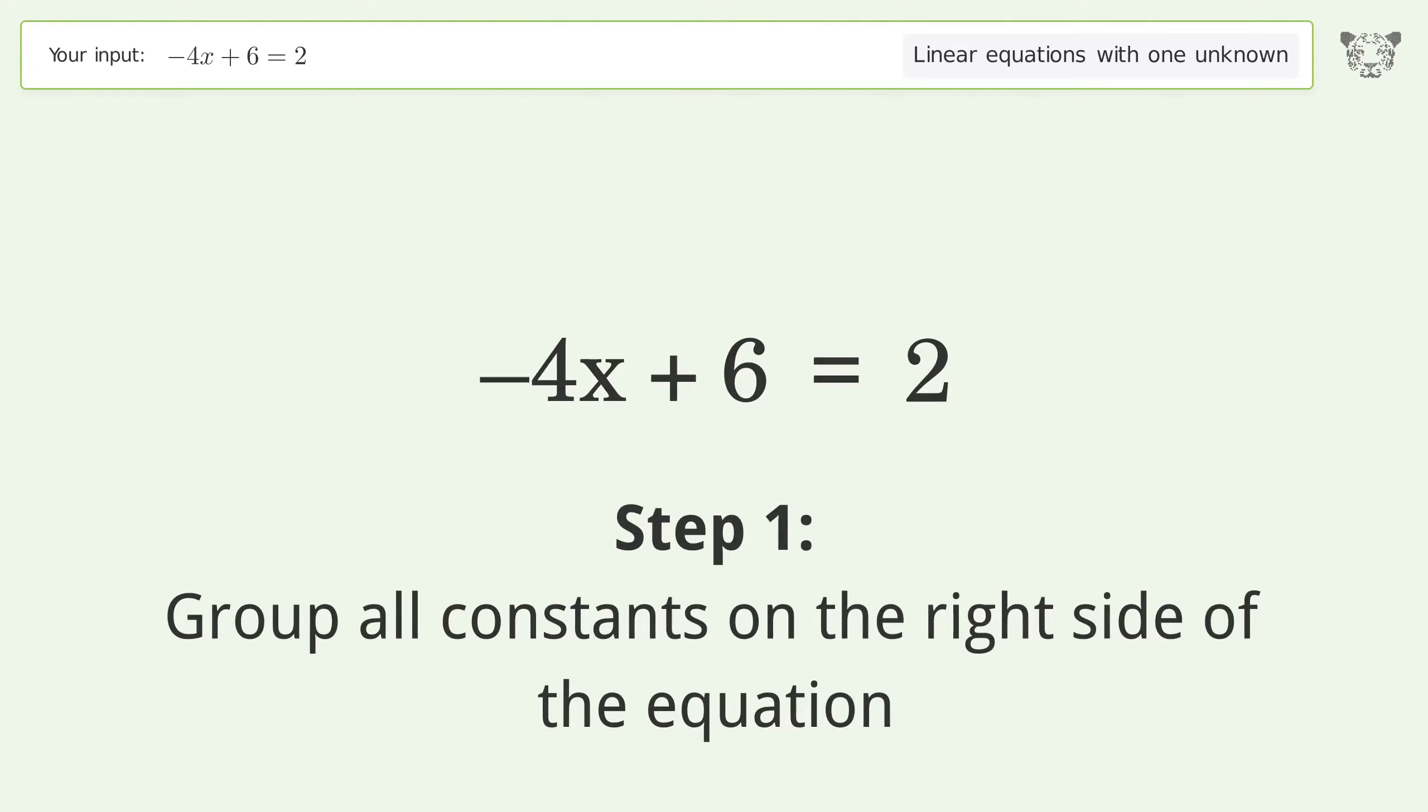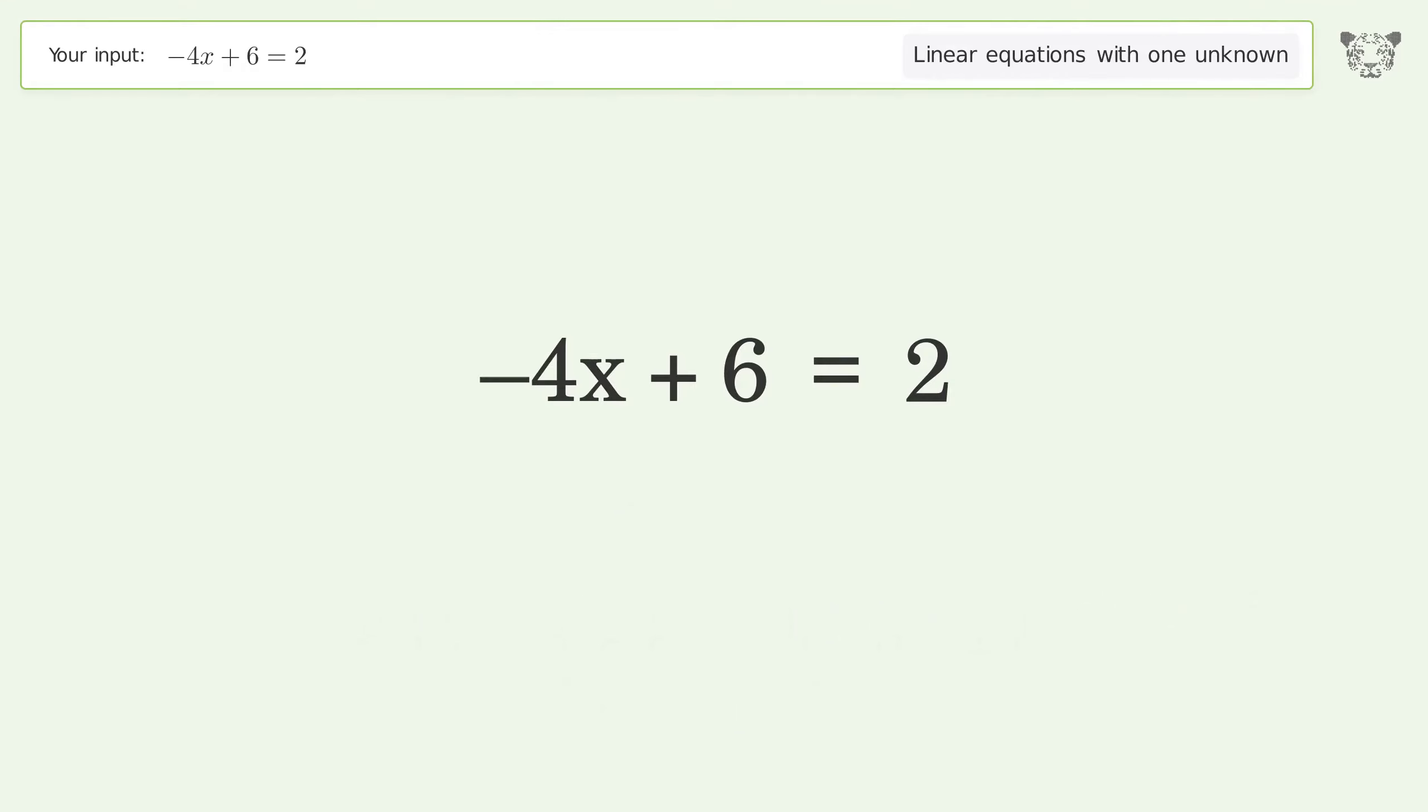Group all constants on the right side of the equation. Subtract 6 from both sides. Simplify the arithmetic.